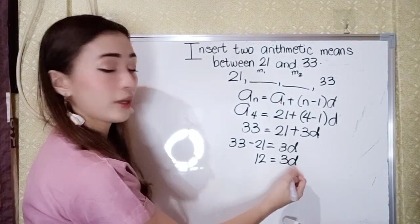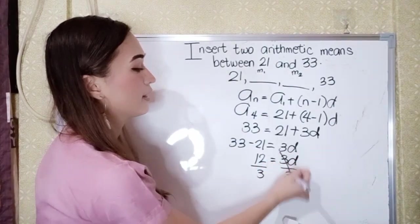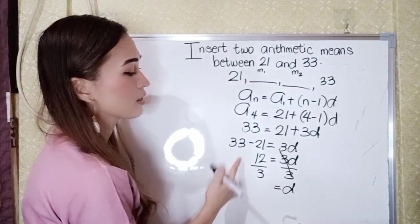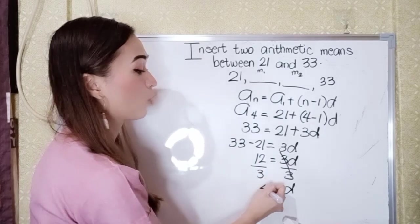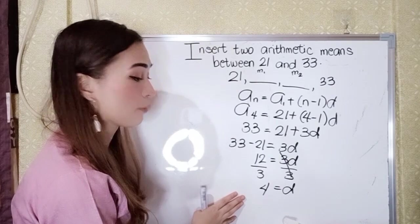So to get D, divide both sides by 3. So 3 divided by 3 is 1, so that is cancel. Now we have D. So 12 divided by 3 is 4. Now our distance is, or our D is 4.